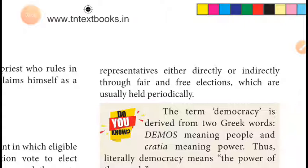Representatives are elected sometimes directly and sometimes indirectly. Directly means in a general election, the people directly elect representatives like MPs and MLAs. Indirectly, the president and prime minister are also elected. This is done through a free and fair election — an honest election without disturbance or interference — and this is only possible in democracy.